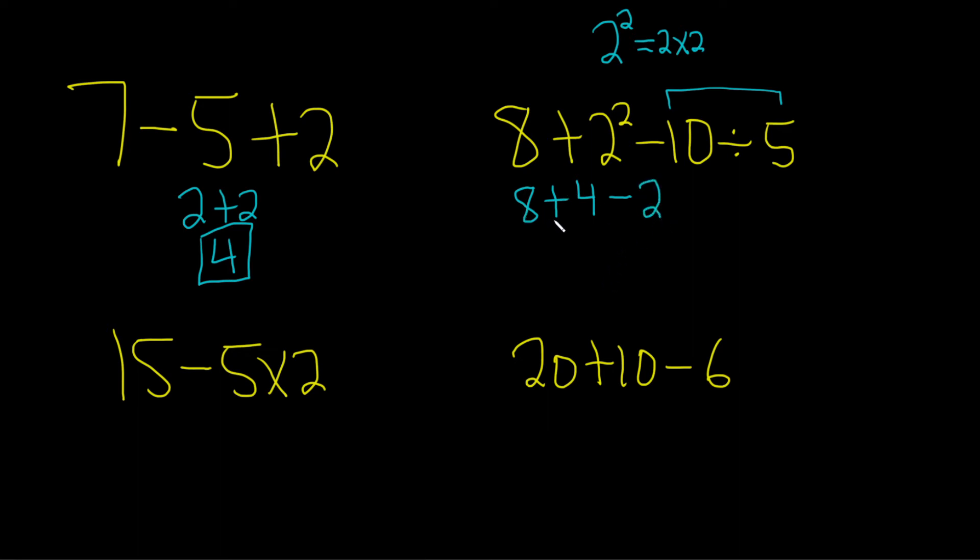Now we work on addition and subtraction, left to right. 8 plus 4 is 12. We bring down the minus sign and bring down the 2. 12 minus 2 equals 10. That's the answer.